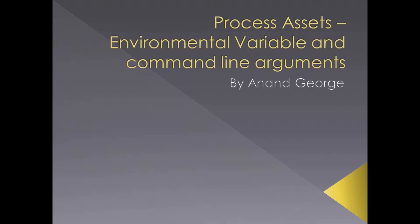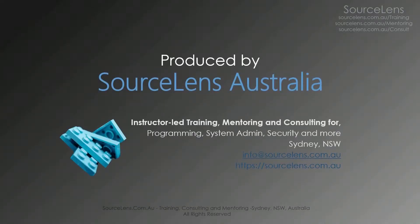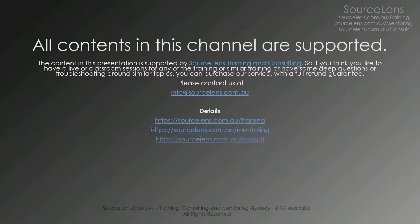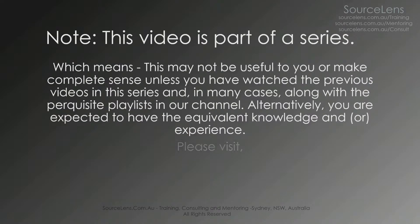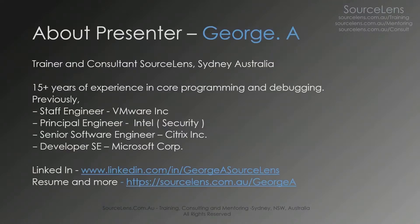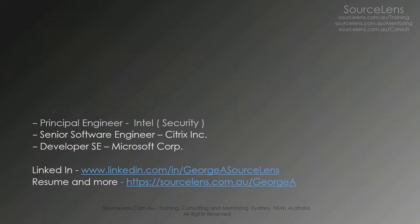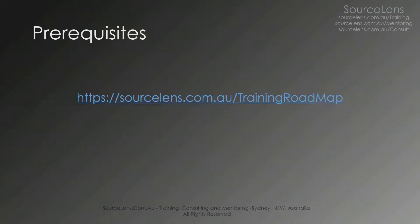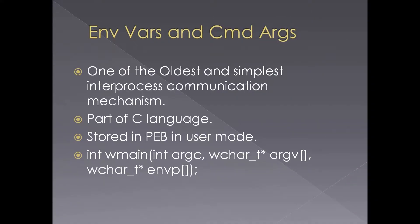In this presentation we're going to look at environmental variables and command line arguments. This is one of the oldest and simplest inter-process communication mechanisms — environmental variables and command line arguments.